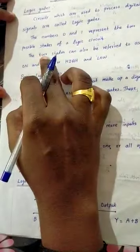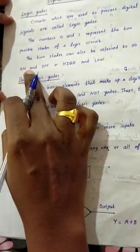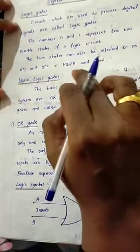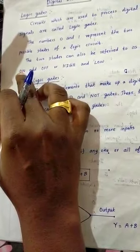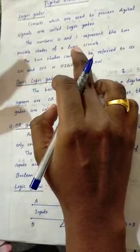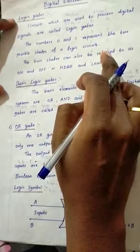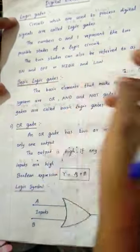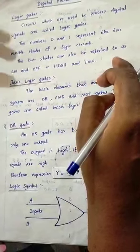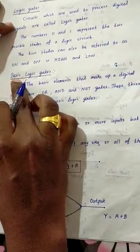The two states can also be referred to as on and off or high and low. For example, high voltage low voltage, electrical bulb on stage off stage. High voltage 1, low voltage 0. And another one, true and false, good and bad.